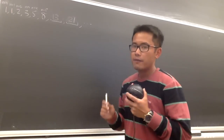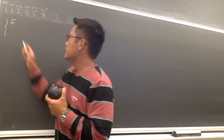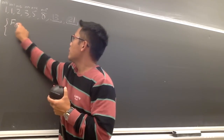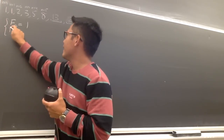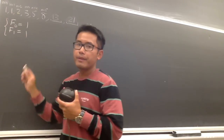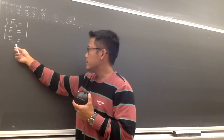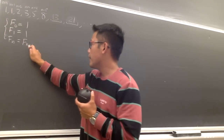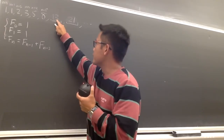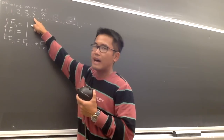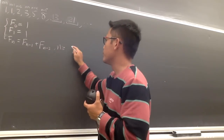First, I will show you guys how to write a recursive formula for the Fibonacci sequence. F stands for Fibonacci. F(0) is going to be 1 — that's the 0th term. And F(1) is going to be 1 as well. And then anything after that, F(n) is equal to the previous term F(n−1) plus F(n−2), the previous previous term. This is the recursive formula, and technically it's only valid when n is greater than or equal to 2.